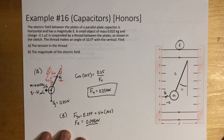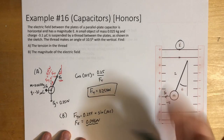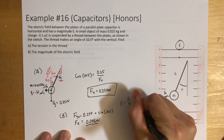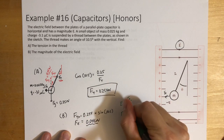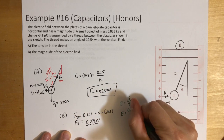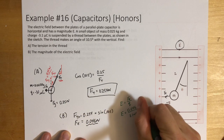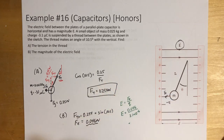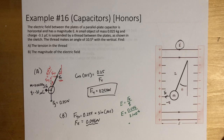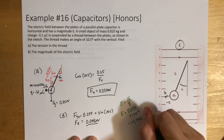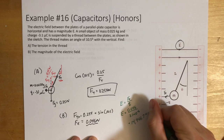Now that we have the force of electricity, we use: electric field equals force of electricity divided by the test charge. So electric field equals 0.046 divided by 3.1 times 10 to the negative 6 coulombs, and we get 14,946.7 newtons per coulomb.